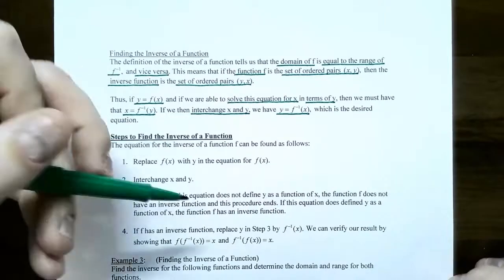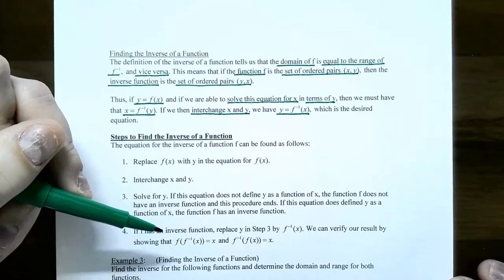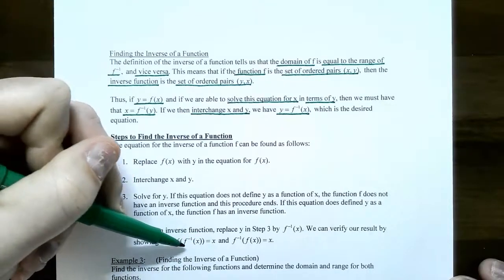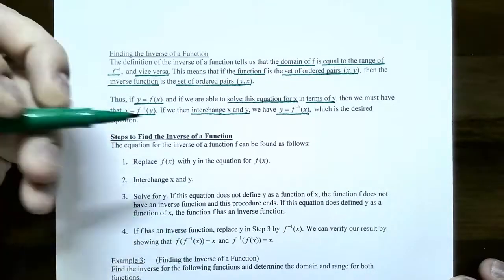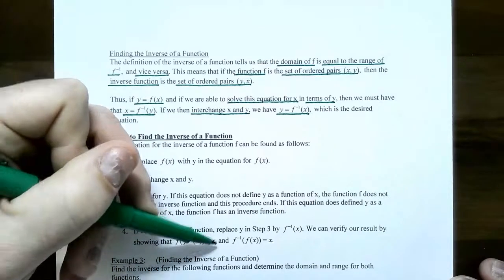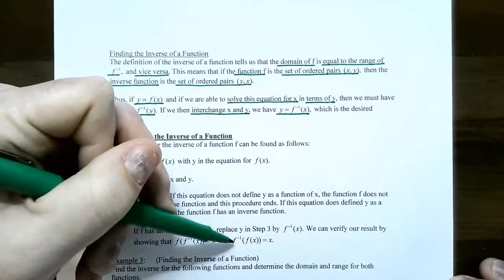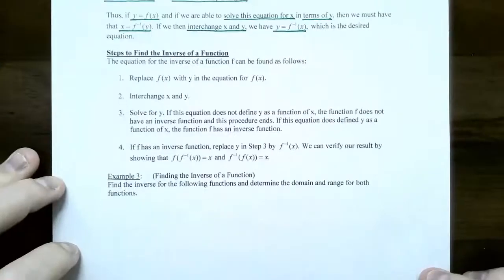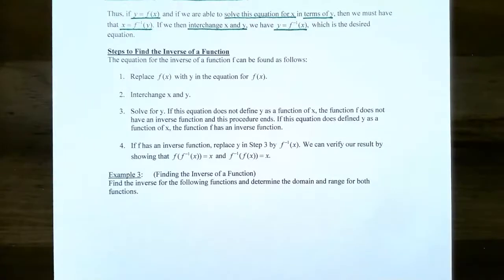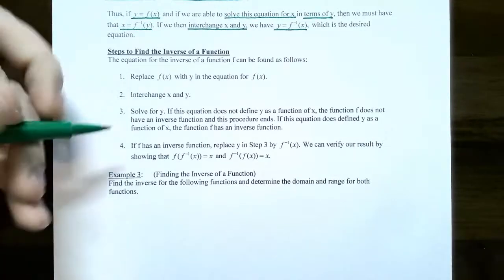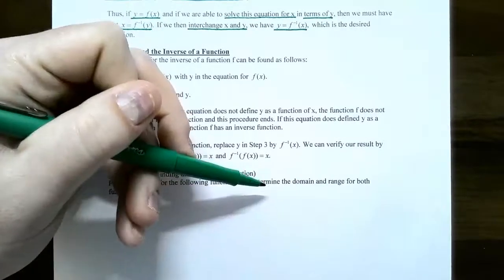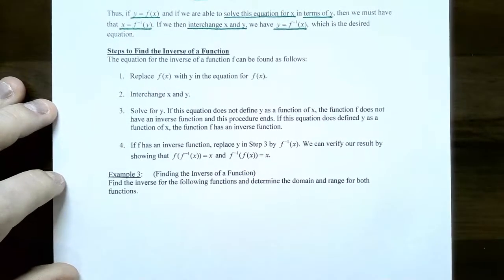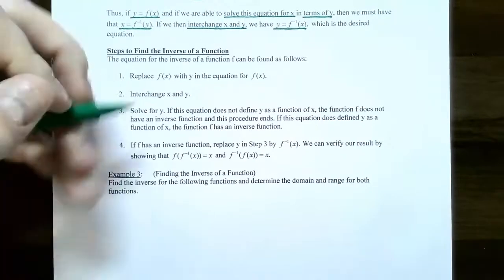Remember from the previous video, to verify whether two functions are inverses, you can do composition — f is the outside function and f inverse is the inside function — and you should just get x. Or vice versa: f inverse of f of x should still give just x. So for example three, we're going to find the inverse function for several different types of functions.